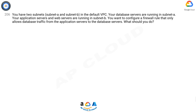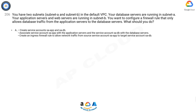Question 206. You have two subnets, subnet A and subnet B, in the default VPC. Your database servers are running in subnet A. Your application servers and web servers are running in subnet B. You want to configure a firewall rule that only allows database traffic from the application servers to the database servers. What should you do?